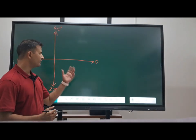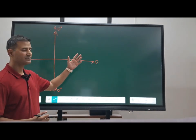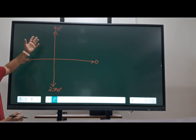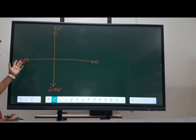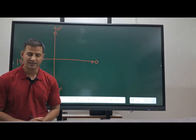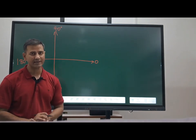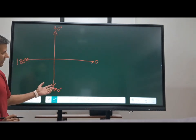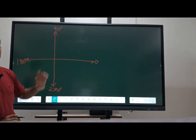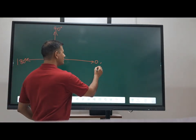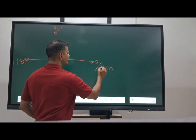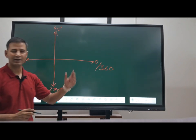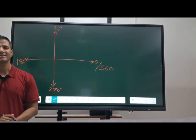In the four quadrants: the 1st quadrant ranges from 0 to 90 degrees, the 2nd quadrant from 90 to 180 degrees, the 3rd quadrant from 180 to 270 degrees, and the 4th quadrant from 270 to 360 degrees, because when you take a full circle it comes to 360 degrees.